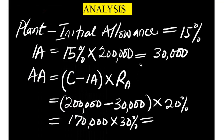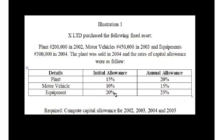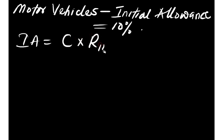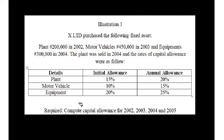We have now calculated all the items needed for plant. Moving on to motor vehicle: the initial allowance rate is 10% and the annual allowance rate is 15%. Initial allowance equals cost × rate of initial allowance. The cost of motor vehicle is 450,000, so initial allowance = 0.10 × 450,000 = 45,000.